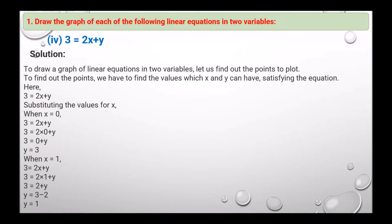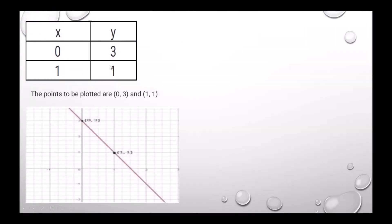Next, for 3 equals to 2x plus y, to draw the graph we substitute values of x. If x equals 0, then y equals 3. If x equals 1, then y equals 1. So the plotted points are (0, 3) and (1, 1), and this is the graph.